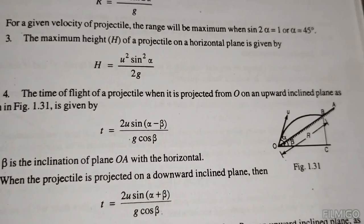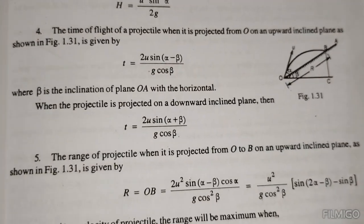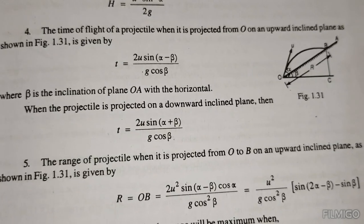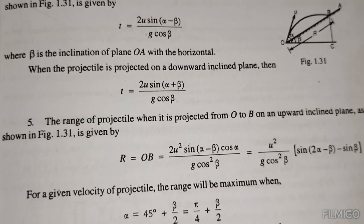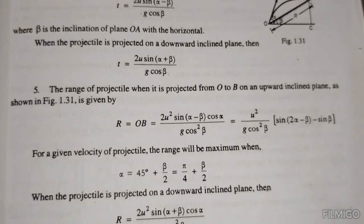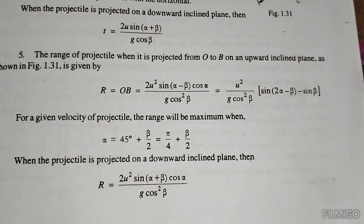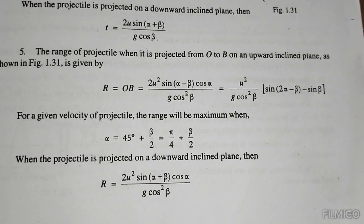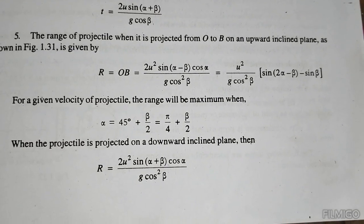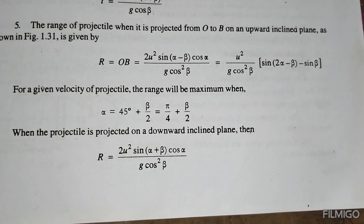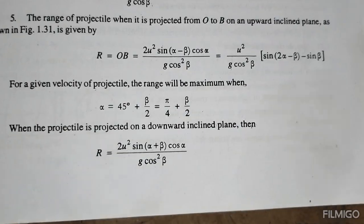Time of flight of a projectile on an upward inclined plane is 2u sin of alpha minus beta divided by g cos beta. On a downward inclined plane it is 2u sin of alpha plus beta divided by g cos beta. Range on an inclined plane is u squared divided by g cos squared beta times sin of 2 alpha minus beta. For maximum range up the incline, alpha equals pi by 4 plus beta by 2. For maximum range down the incline, alpha equals pi by 4 minus beta by 2.